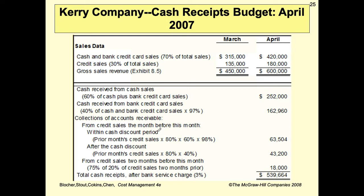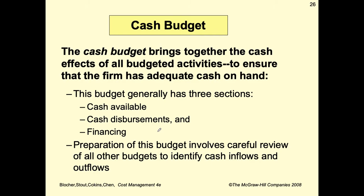The cash budget brings together the cash effects of all budgeted activities to ensure the firm has adequate cash on hand. This budget generally has three sections: cash available, cash disbursements, and financing. Preparation of this budget involves careful review of all other budgets to identify cash inflows and outflows.